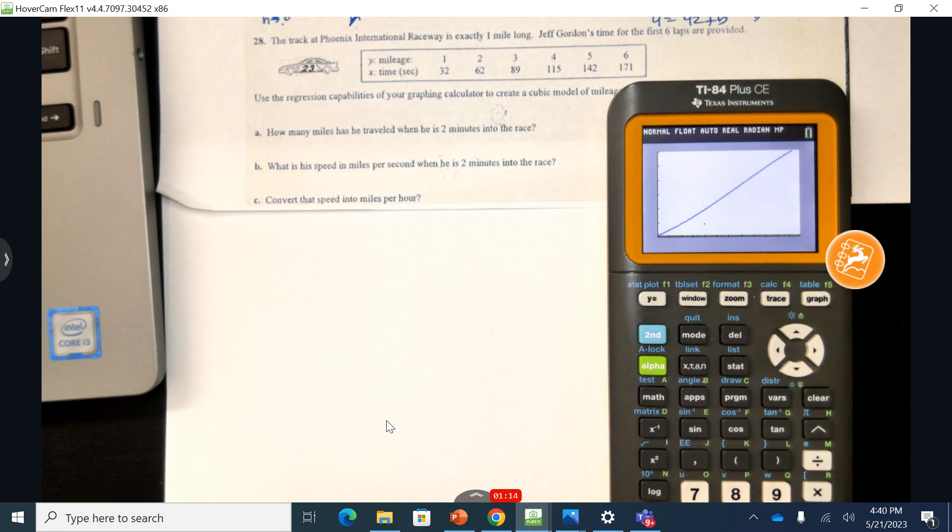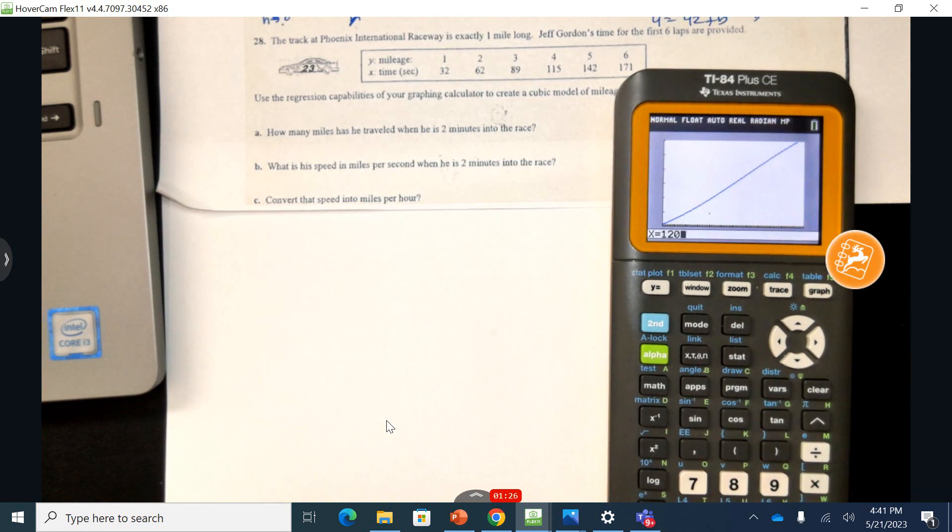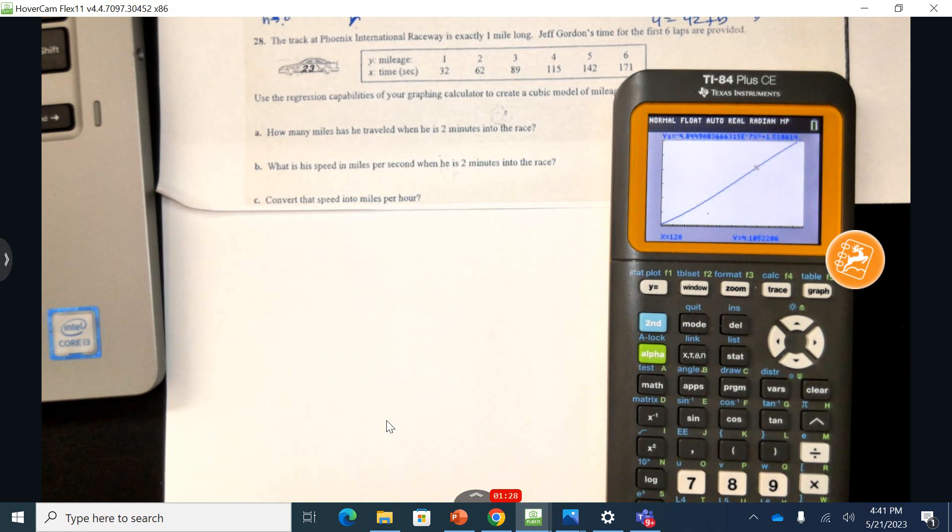Okay, part A, how many miles have you traveled in 2 minutes? So I need to convert 2 minutes into this. So 2 minutes would be 120 seconds. So 2nd trace value, 120, matches up with 4.18. Let me write that down.